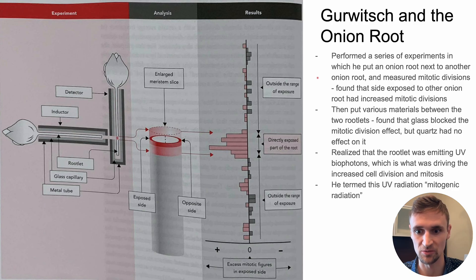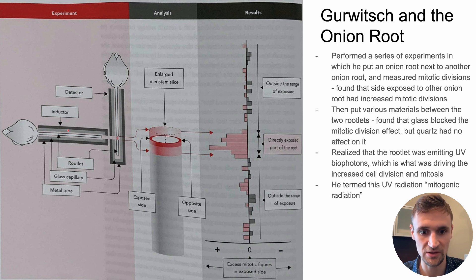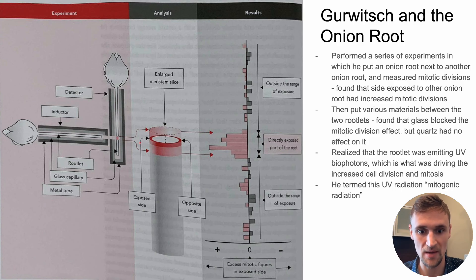Gurwitch performed a series of experiments placing one onion root next to another onion root and measured the mitotic division — the amount of cell divisions. He found that the side exposed to the other onion root had increased mitotic divisions compared to the side that wasn't exposed. Only one side of the measured onion root was exposed to the other. After finding this, he put many different materials between the two onion roots, and found that glass blocked the effect of increased mitotic divisions, while quartz completely allowed it to happen.